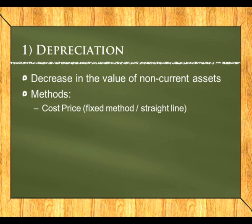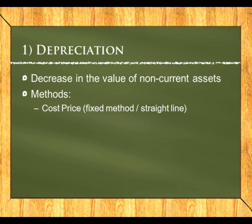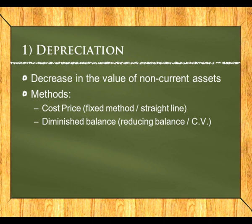With the straight-line method, we know either a percentage per annum or the number of years to depreciate the asset. For example, an asset costing R50,000 depreciated at 10% per annum on cost gives R5,000 depreciation every year for 10 years. The journal entry is: debit depreciation and credit accumulated depreciation on that asset — for example, accumulated depreciation on vehicles.